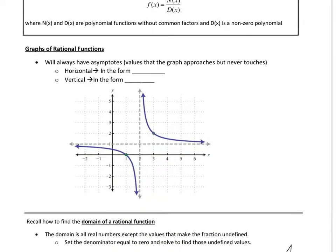A few things about graphs of rational functions: graphs of rational functions will always have asymptotes, or in other words, values that the graph approaches but never touches.